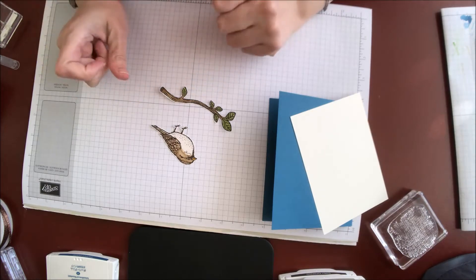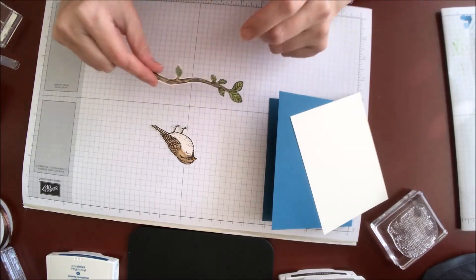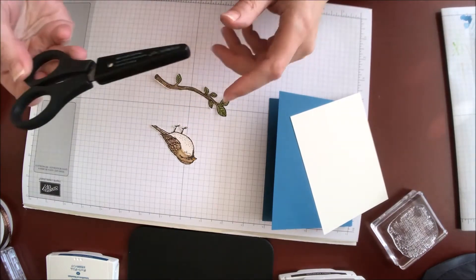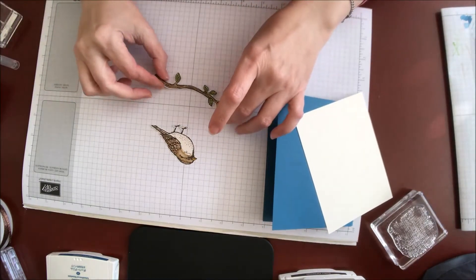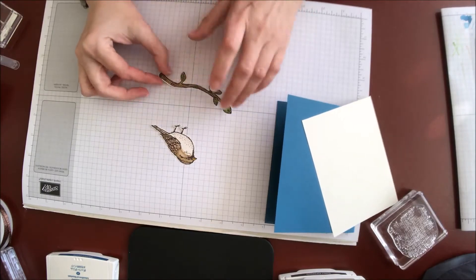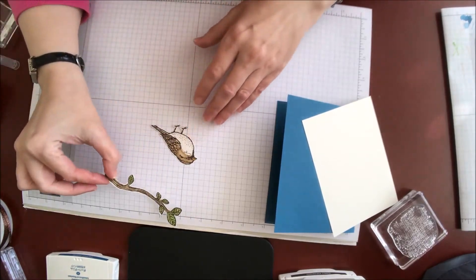But that's okay. If you don't have the framelits, you can what we call fussy cut. I have my snips, Stampin' Up snips here. They are really sharp and they work great. So I've gone ahead and already stamped and colored my leaf here.